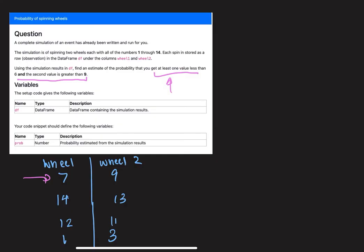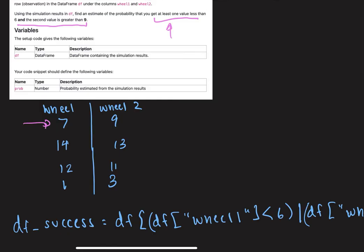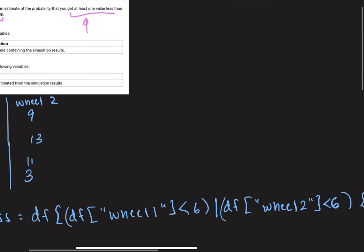So first, let's write our conditional. We want at least one value less than 6 and the second value is greater than 9. Let's break it down. Let's first do the first part, at least one value less than 6. If we need at least one value less than 6, then that means either wheel 1 can be less than 6 or wheel 2 can be less than 6. So we would say DF success is when wheel 1 is less than 6 or wheel 2 is less than 6.